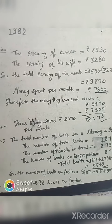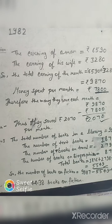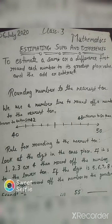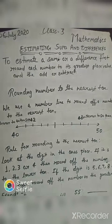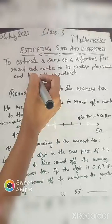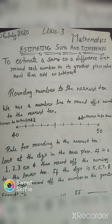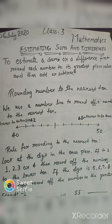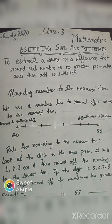My dear students, now I am going to start our today's chapter. Today we will solve exercise 4G, that is 'Estimating Sums and Differences'. To estimate a sum or difference, first round each number to its greatest place value and then add or subtract. It is very important to understand estimation and rounding. Estimating a number means roughly calculating or judging the value. Rounding is one way of estimation.